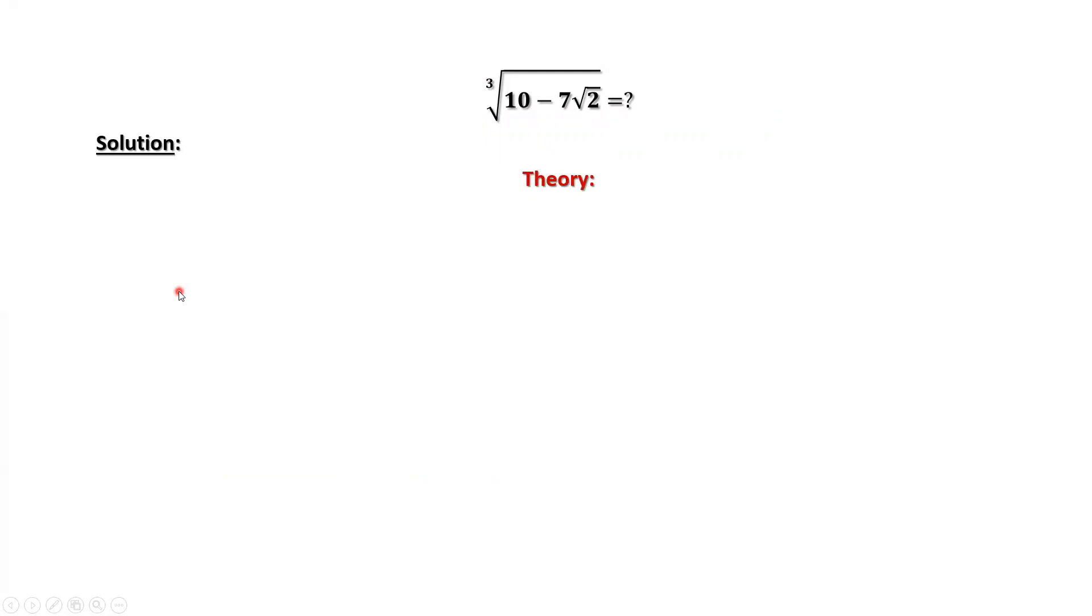Here is the theory. If the third root of a plus b times the square root of k, here a and b both are integers, k is a positive integer.